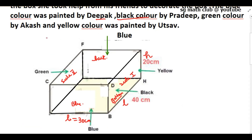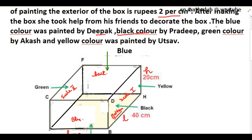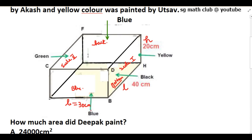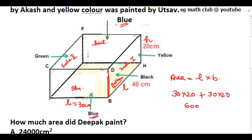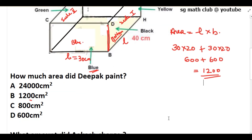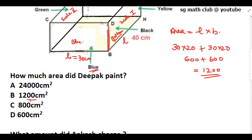The next question is: how much area did Deepak paint? Deepak painted the blue color, which covers the front portion as well as the back portion. The area of each face is length × breadth. Here breadth is 30 and the height is 20, so 30 × 20 = 600, plus the back portion 30 × 20 = 600, giving 600 + 600 = 1,200 centimeter square. So Deepak also painted 1,200 cm².